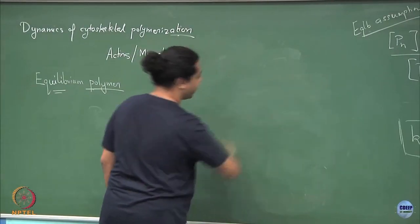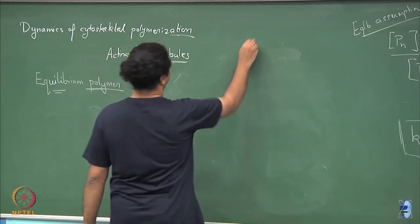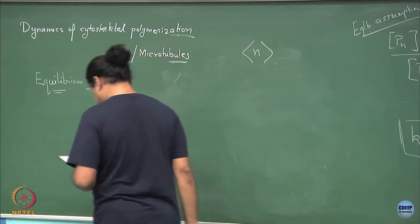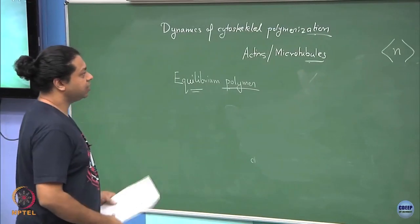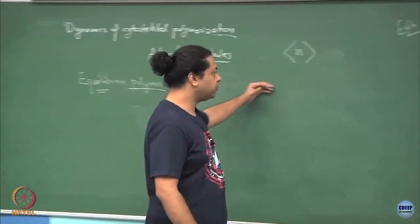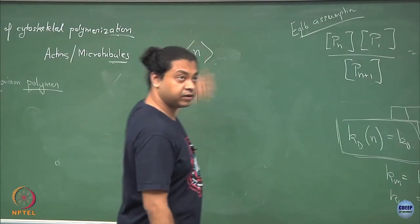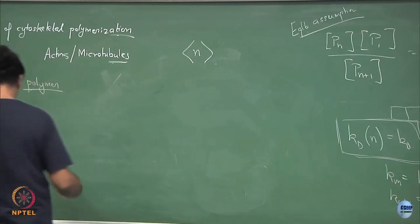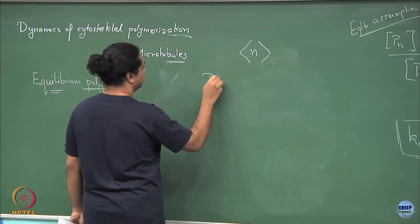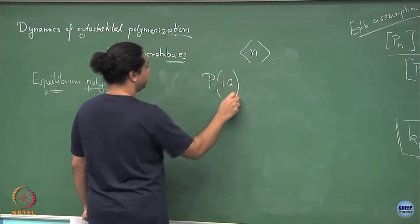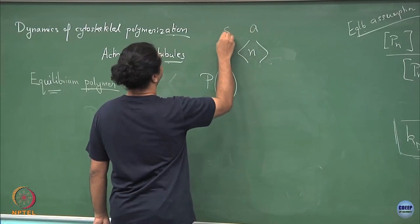I have obtained some sort of a mean length n. I can calculate how much time it takes for a microtubule or an actin to reach this mean length. I just look at time scales of fluctuations. For example, if I were to add a monomer, and a monomer has size a.